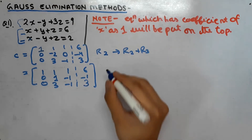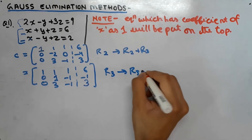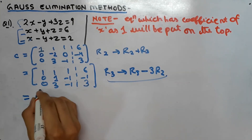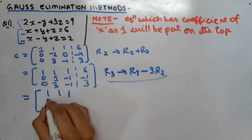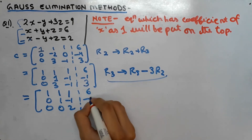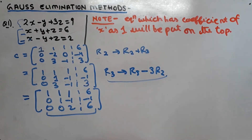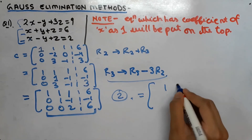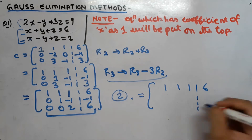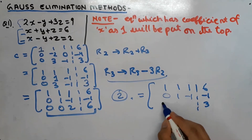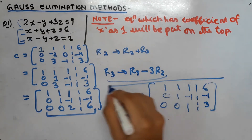Now we do another row transformation: R3 → R3 - 3R2. This gives matrix: row 1: 1, 1, 1; row 2: 0, 1, -1; row 3: 0, 0, 2, with B column: 6, -1, 6. We then divide the last row by 2 to obtain our final echelon form: row 1: 1, 1, 1; row 2: 0, 1, -1; row 3: 0, 0, 1, with B column: 6, -1, 3.